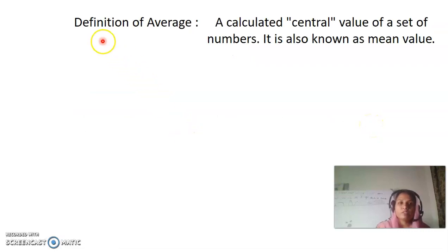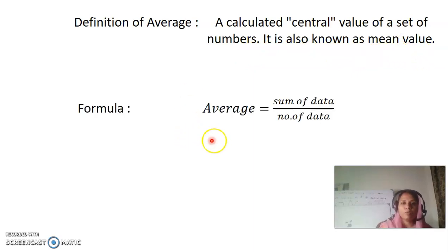What is the average? The definition of it is a calculated central value of a set of numbers. It is also known as a mean value. And the formula for average is sum of data over number of data.